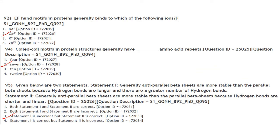EF-hand motifs in proteins generally bind Ca²⁺ ions. The coiled-coil motif in protein structure generally has 7 amino acid repeats.